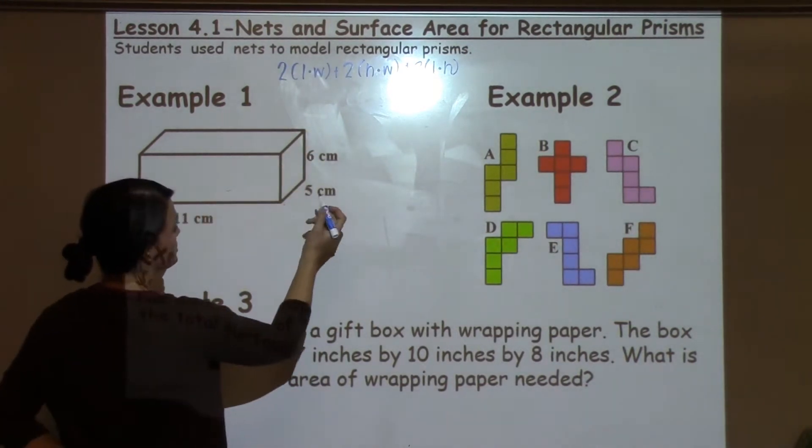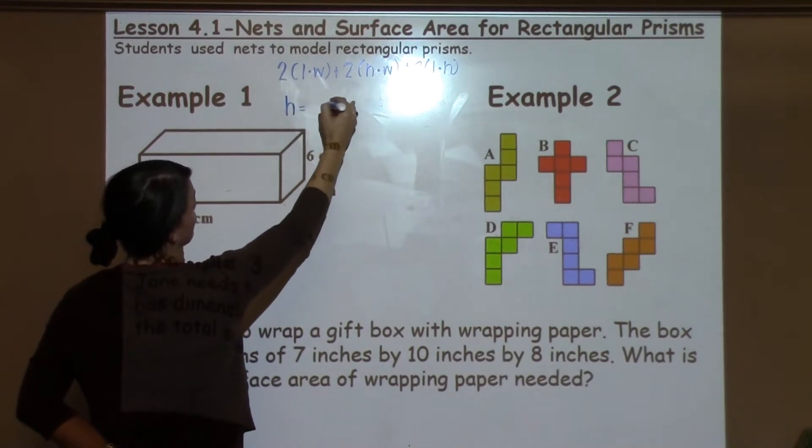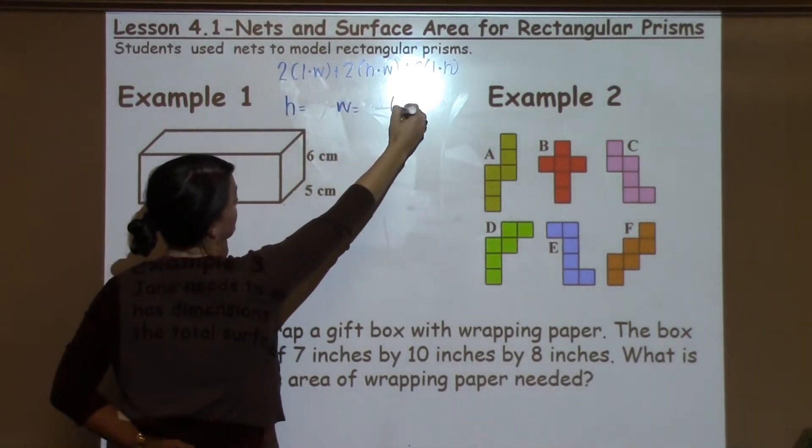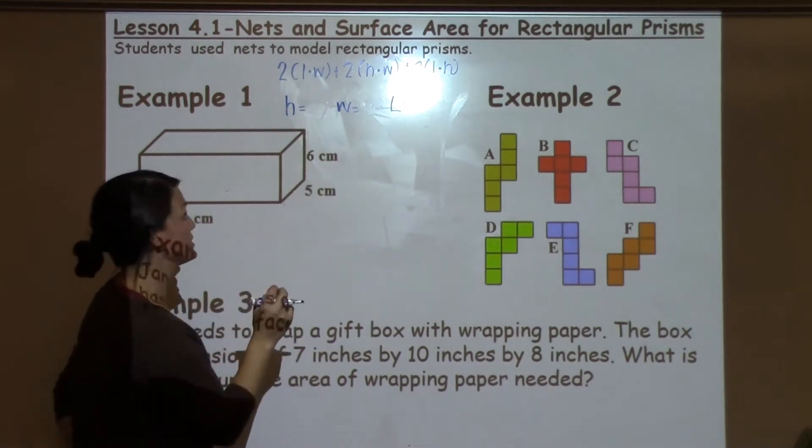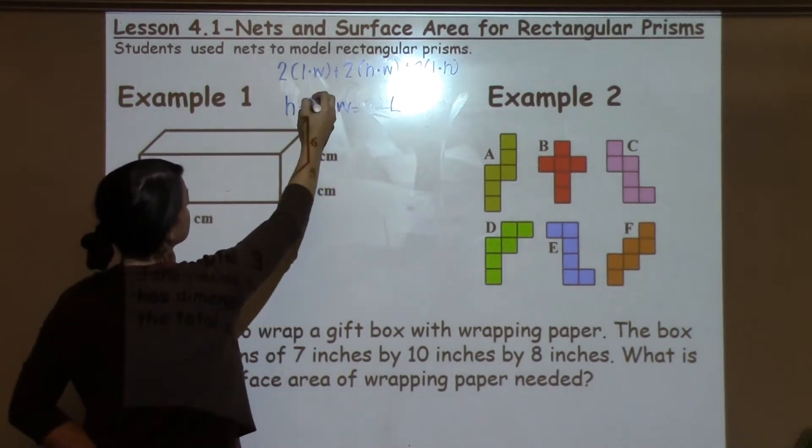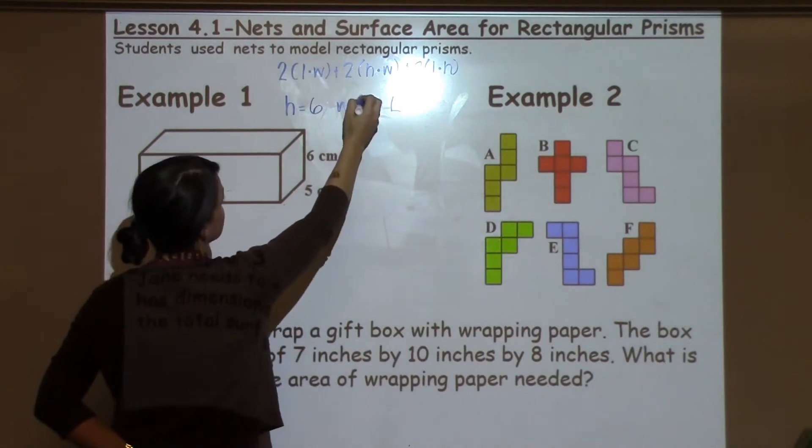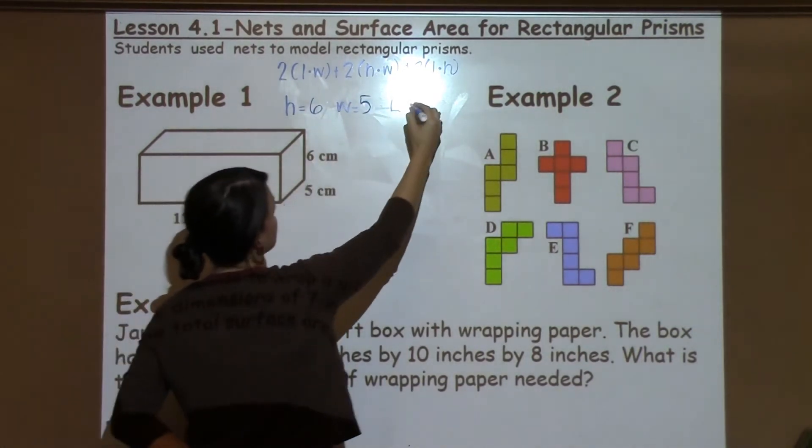I encourage the students to write out what is the height, what is the width, and what is the length because it helps them to see and make sure they're using the right numbers in the formula. So the height is 6, the width is 5, and the length is 11.